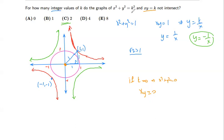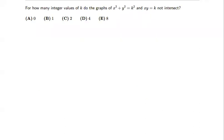If k equals four, the circle has radius two. And the graph of xy equals four, which is y equals four over x, has its closest point farther from the origin, but the circle's radius is now large enough that there will be an intersection. So if k is greater than or equal to two, or less than or equal to negative two, there will be an intersection. Without any graphing tools, we can see that there are only two integer solutions graphically.